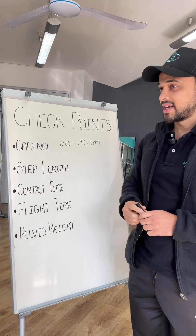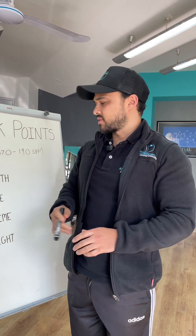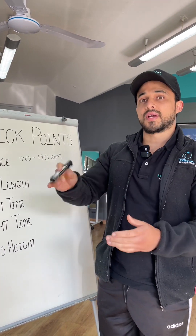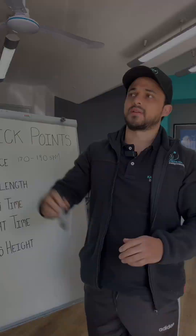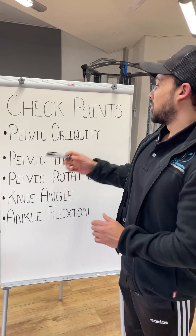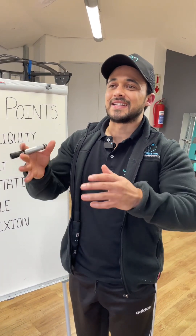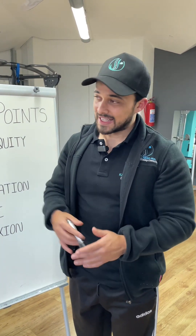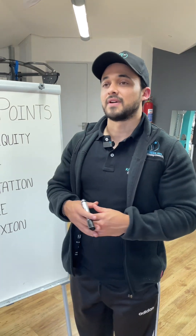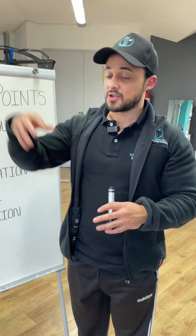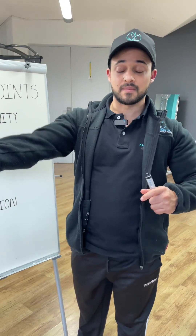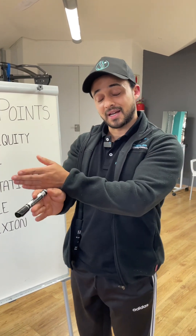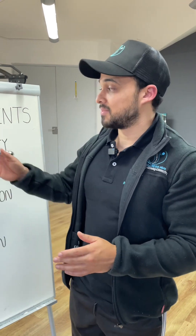Pelvis height is very similar to flight time — you don't want your pelvis moving up and down while running; it should be relatively stable. The next checkpoint is pelvic obliquity: do your legs cross the midline when you run? If you take a video from the front and notice the leg shifts past the midline, that is indicative of hip instability.